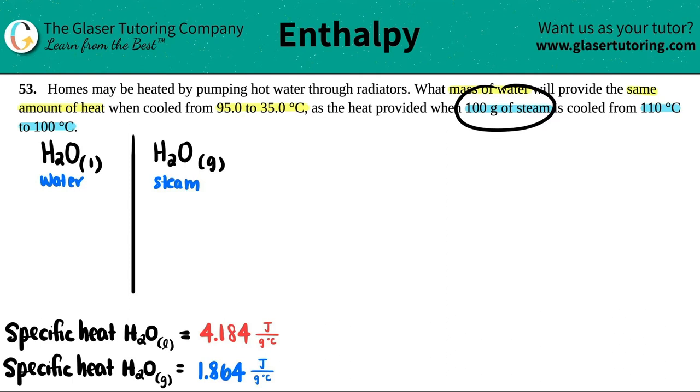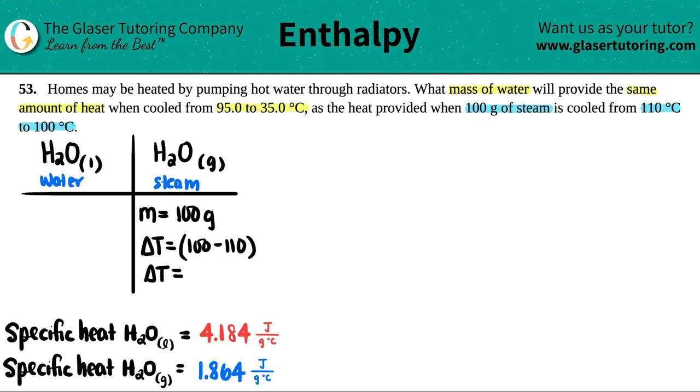They told us we had 100 grams of steam, so we know the mass is 100 grams. The steam was being cooled from 110 degrees Celsius to 100 degrees Celsius. We're talking about a Q value, and we know specific heats, so I can find delta T. Delta T is always final minus initial. The 100 degrees is final and 110 is initial, so it's 100 minus 110. My delta T for the steam is negative 10 degrees Celsius.